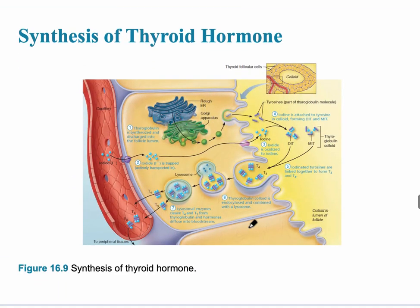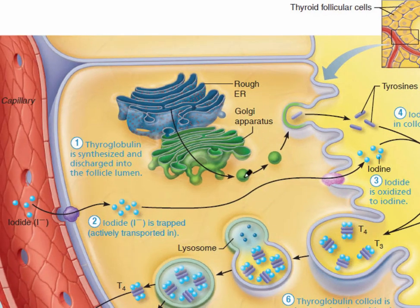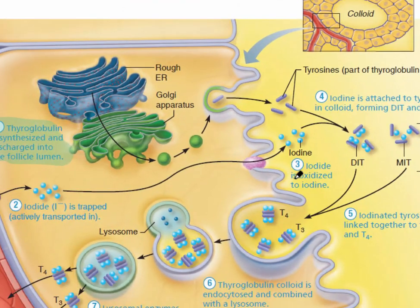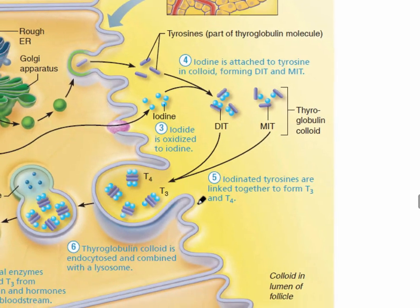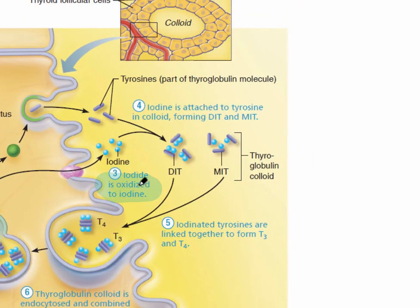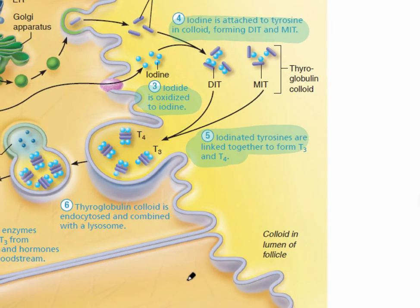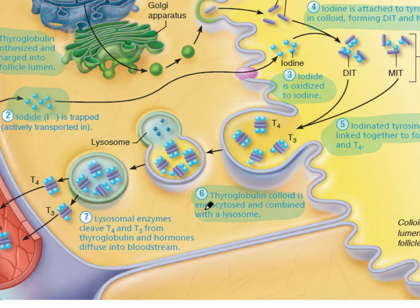This slide shows a pictorial view of thyroid hormone synthesis. First, thyroglobulin is synthesized and goes into the follicle lumen. Then iodide is transported into the lumen, where it is oxidized to iodine and attached to thyroglobulin, forming T3 and T4. The thyroglobulin colloid is then released back toward the blood, and T3 and T4 enter the bloodstream.